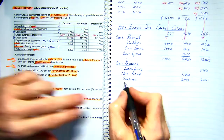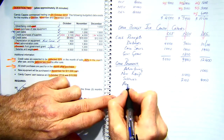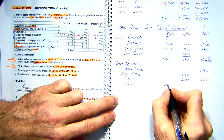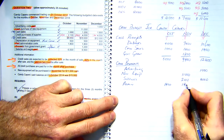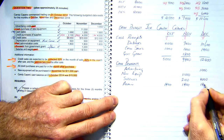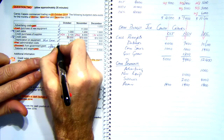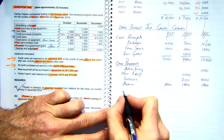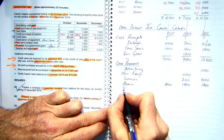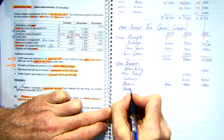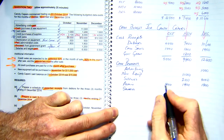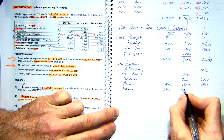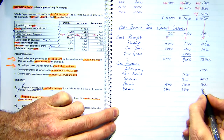My next item is admin costs: $1,800 per month. And my last one is salaries and wages paid: $6,500, $6,500, and $6,500 across the three months.